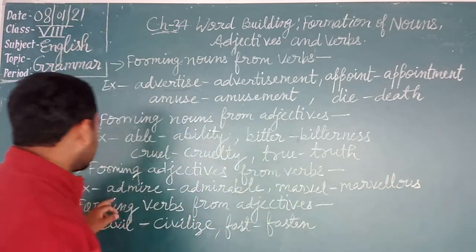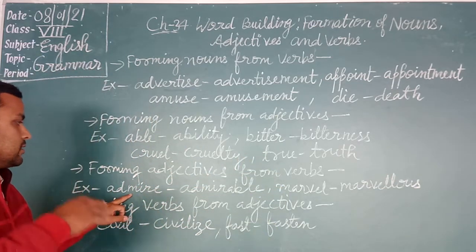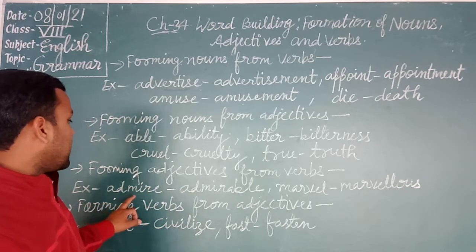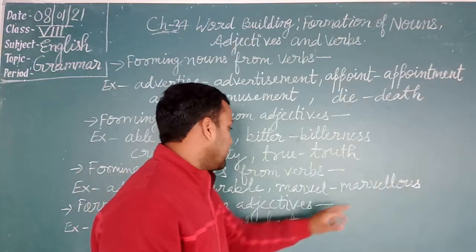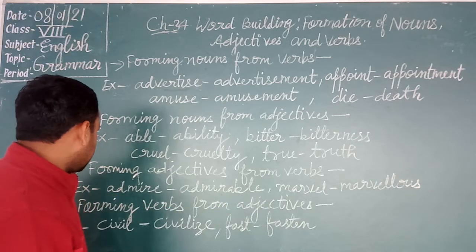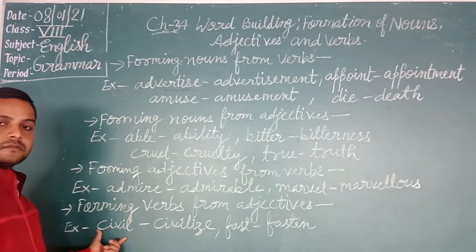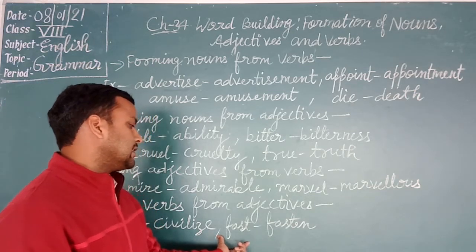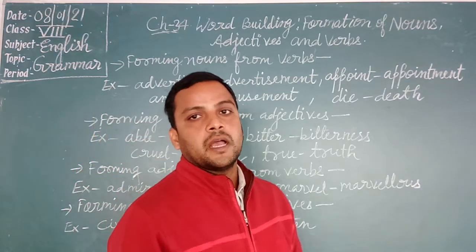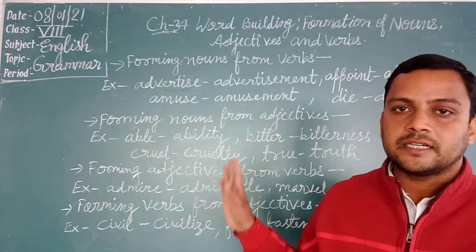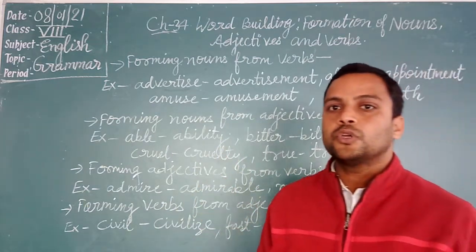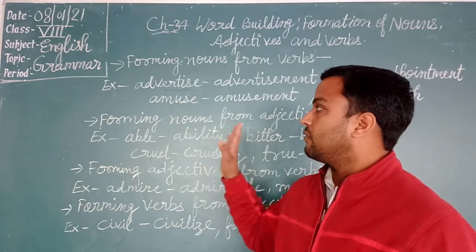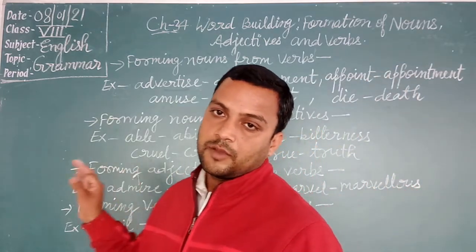Forming adjectives from verbs: 'admire' gives 'admirable.' 'Marvel' gives 'marvelous.' Next, forming verbs from adjectives: 'civil' is an adjective, then the verb is 'civilize.' 'Past' is an adjective, the verb form follows. So a list of these nouns, adjectives, and verbs has been given in your book. You will revise and learn all these — formation of verbs, formation of adjectives, formation of nouns — properly.